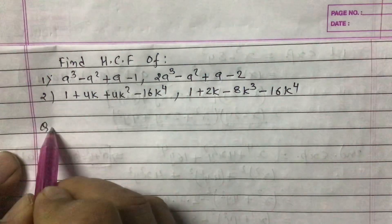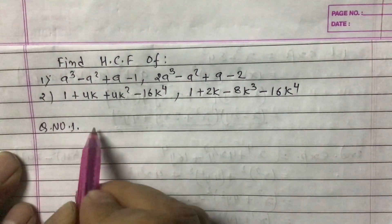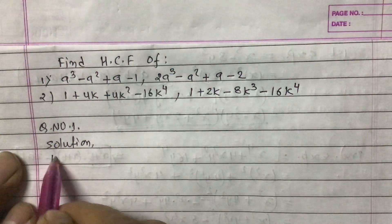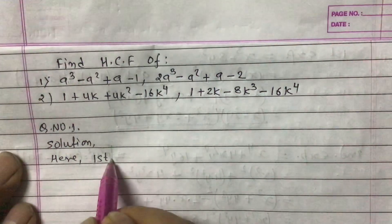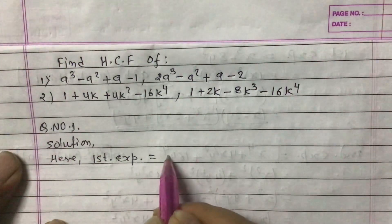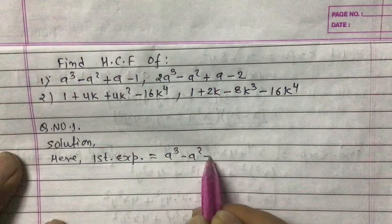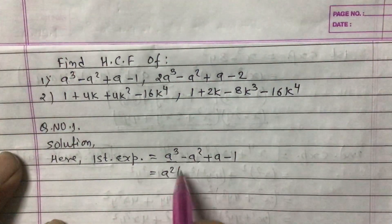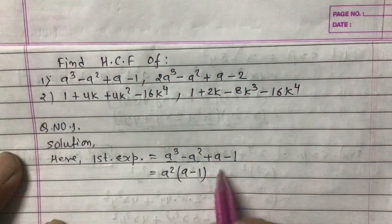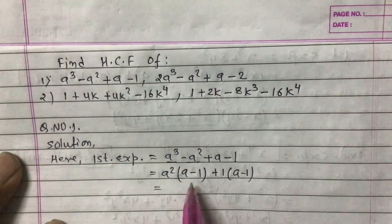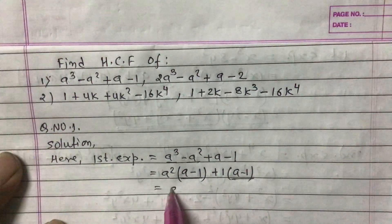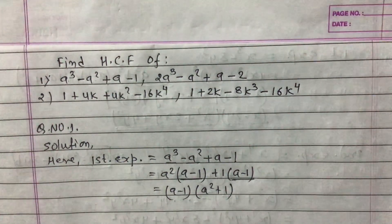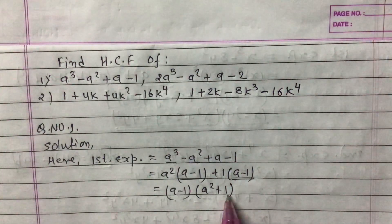Question number one solution. The first expression is a³ - a² + a - 1. In the first two terms, a² is common, so we get a²(a - 1). In the last two terms, 1 is common, giving +1(a - 1). Now (a - 1) is common in both groups, so we take it out: (a - 1)(a² + 1). These are the two factors of the first expression.